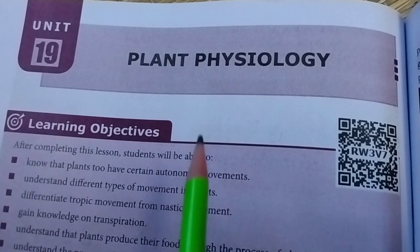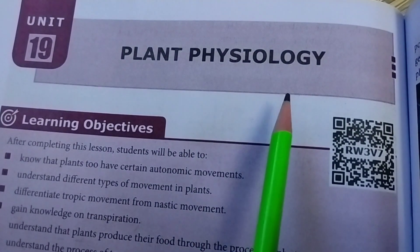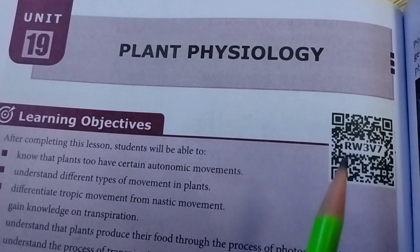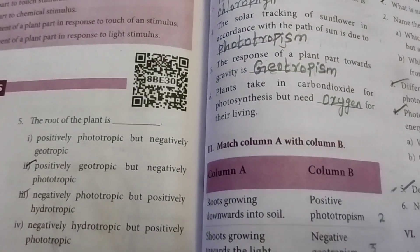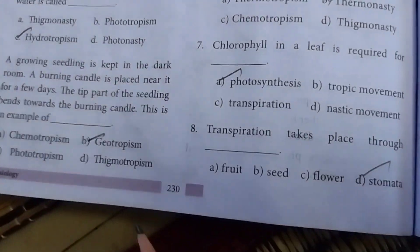Minute 19, Plant Physiology, the lesson order book by Kansas Popper, take page number 230.